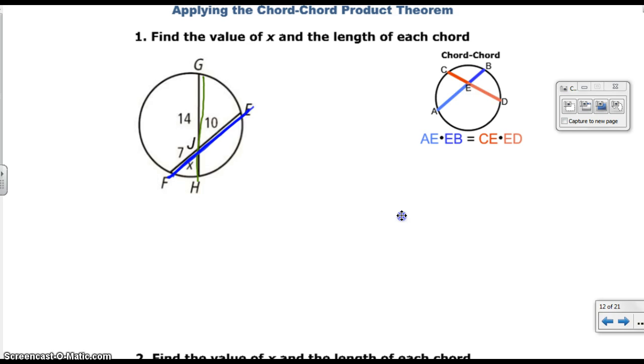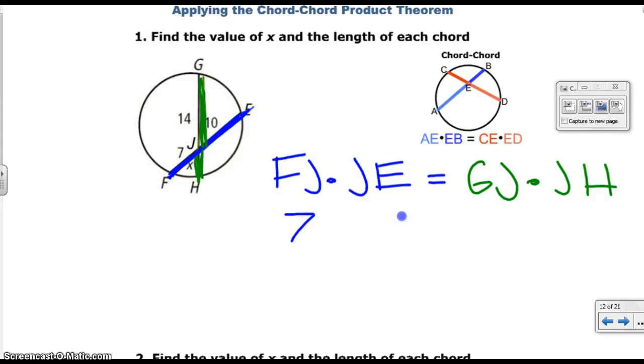There's FE right there, and here is GH. So, the chord-chord product theorem says that the two pieces multiplied by each other will equal the two pieces multiplied by each other of the other chord. It means that FJ times JE is going to equal GJ times JH. Because you can see that FJ and JE make up the chord FE, and then GJ and JH make up the chord GH. So, now let's just plug in the pieces. FJ is 7, JE is 10, GJ is 14, and JH is our x.